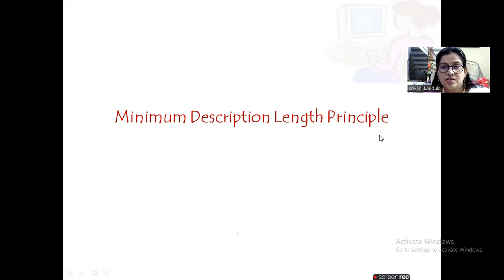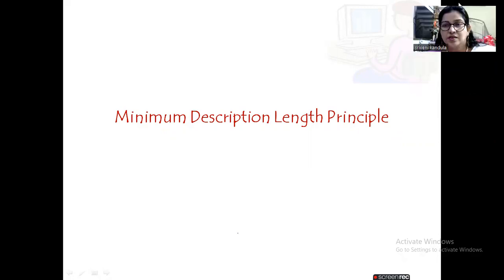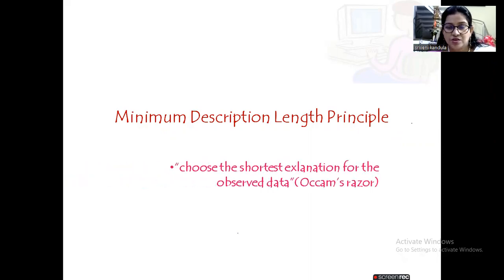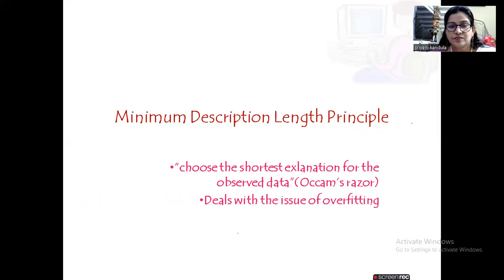Welcome back everyone. Let us discuss the Minimum Description Length principle. This principle is based on Occam's Razor, which we discussed in decision tree learning. When we discussed hypothesis space search, we saw that Occam's Razor says: choose the shortest hypothesis — similarly here, choose the shortest explanation for the observed data — which helps us deal with the issue of overfitting.